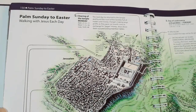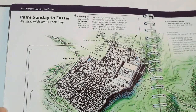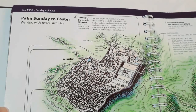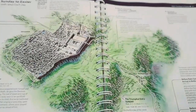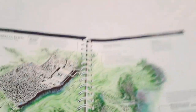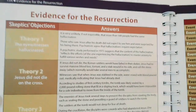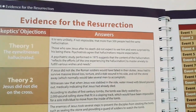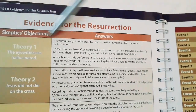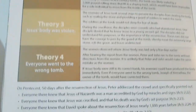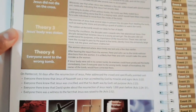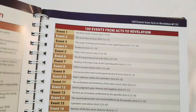Palm Sunday to Easter — walking with Jesus each day. It talks about every stage of what the Lord Jesus went through. Then there's evidence for the resurrection — a beautiful reference guide. Skeptic objections are listed with answers: 'Jesus did not die on the cross' — you get the answer; 'the body was stolen' — you get the answer; 'everyone went to the wrong tomb' — you get the answer. It also talks about Pentecost — 50 days after the resurrection, Peter addressed the crowd, the Holy Spirit fell upon them as tongues of fire.